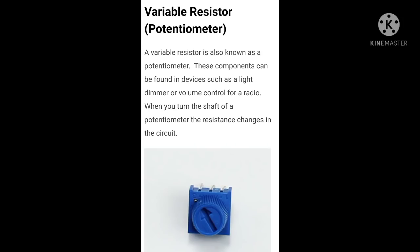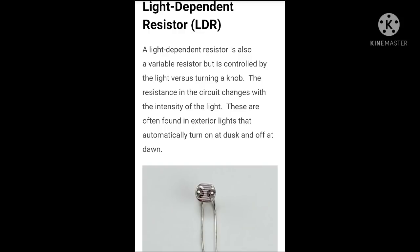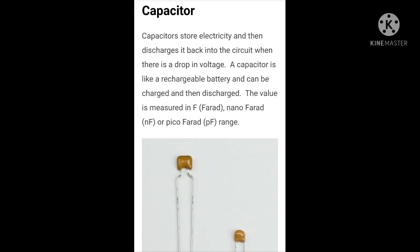Variable resistor, also known as a potentiometer — a variable resistor is also known as a potentiometer. These components can be found in devices such as a light dimmer. Light dependent resistor — a light dependent resistor is also a variable resistor but is controlled by light, rather than turning a knob.